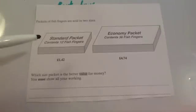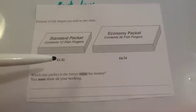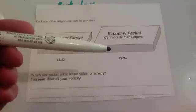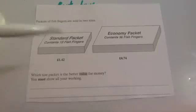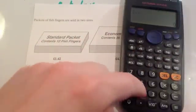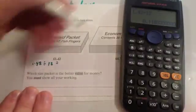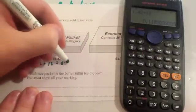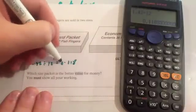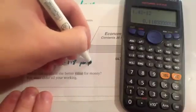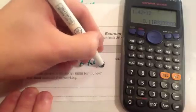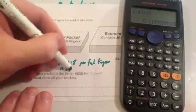We can find the cost for one fish finger. If you divide £1.42 by 12 and £4.74 by 36, you'll find the cost of one fish finger. Using a calculator for the first one, you've got £1.42 divided by 12 fish fingers, which equals 0.118 pounds per fish finger, or in other words, 11.8 pence per fish finger.